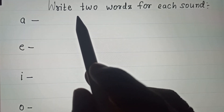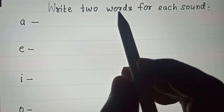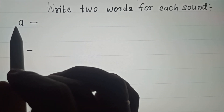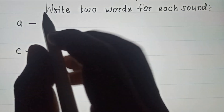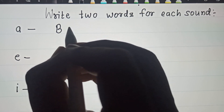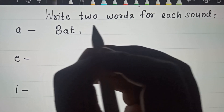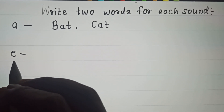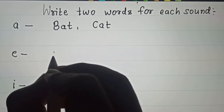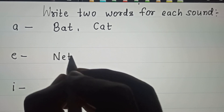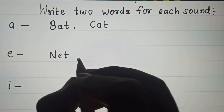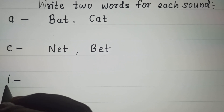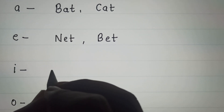Hello students, today we are going to write two words for each sound. The words for sound 'a' are bat and cat. The words for sound 'e' are net and bet.